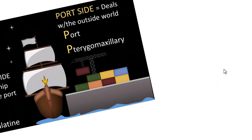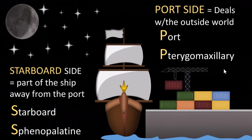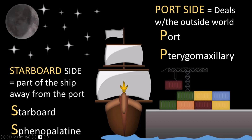You can remember it like this: in old Navy, the port side of the ship was the side that docked along the port, so it was the side that deals with the outside world. The pterygomaxillary fissure starts with P — well, the P is not pronounced but it's spelled — so it is the port side, the side towards the world outside of the patient, meaning it is lateral. And we also have the starboard side, the part of the ship away from the port. The sphenopalatine foramen starts with S, so it is the starboard side — the inside world of the patient — and it would be the medial side.